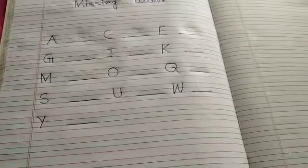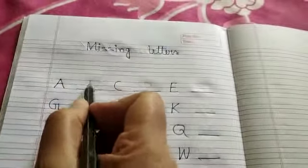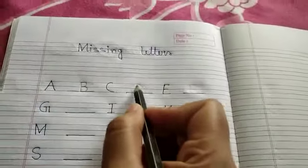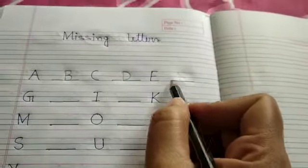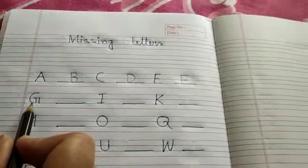Look very carefully how to write. What comes after A? B. What comes after C? D. What comes after E? F. What comes after G?